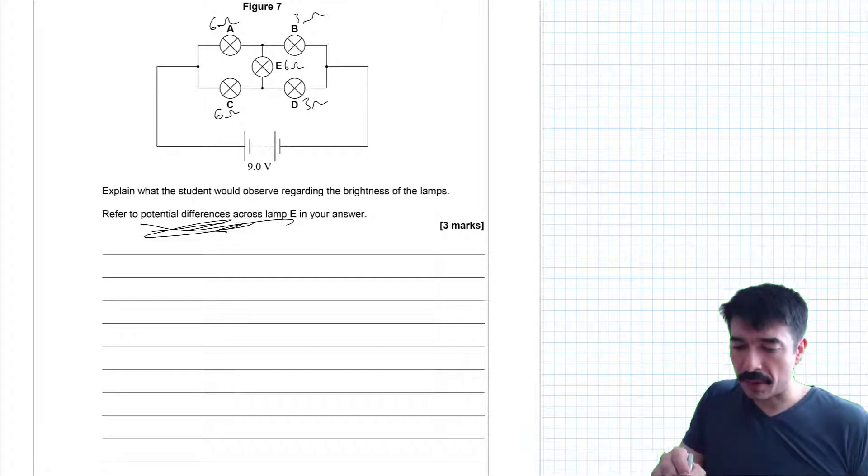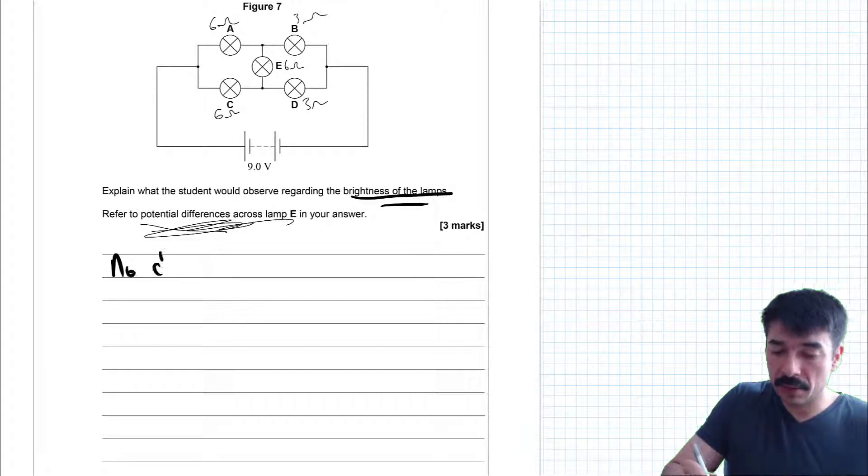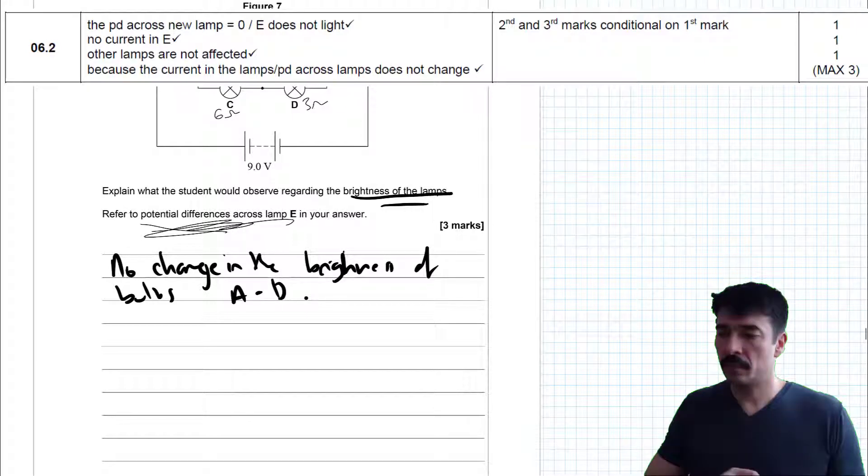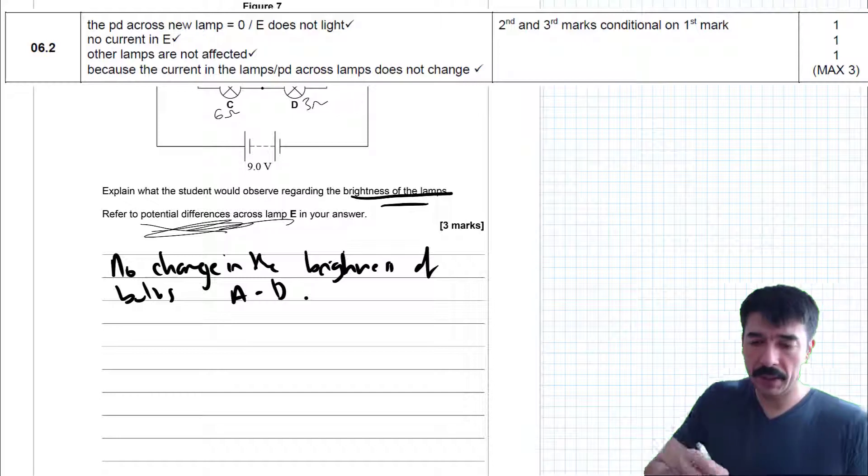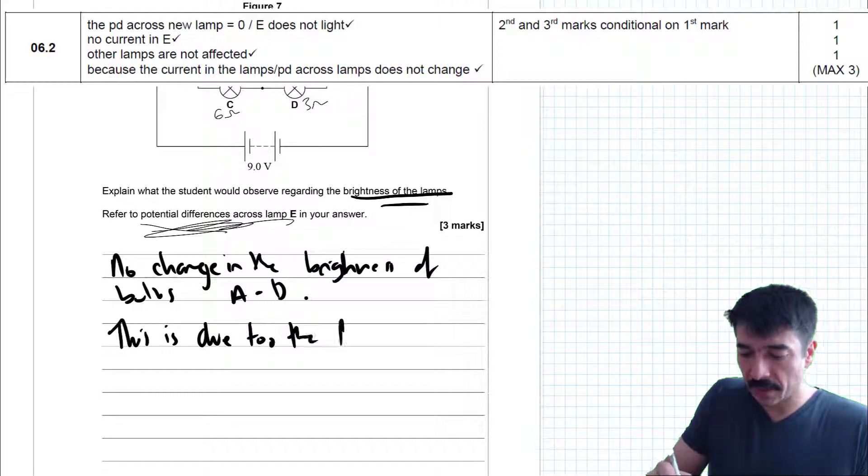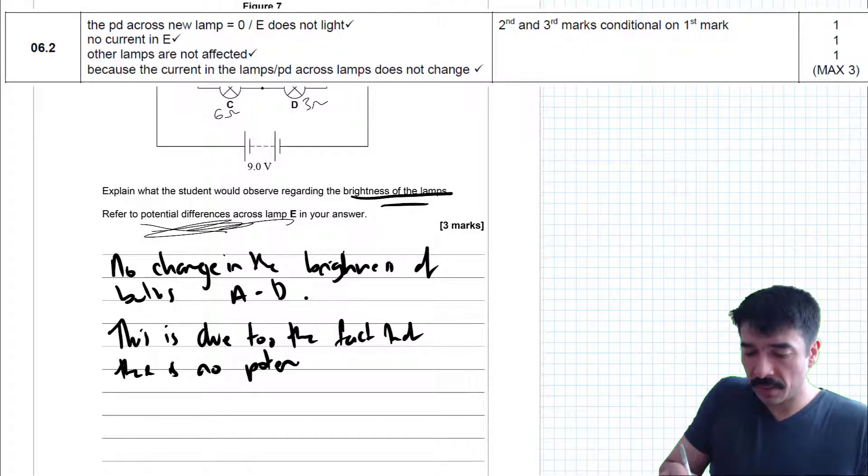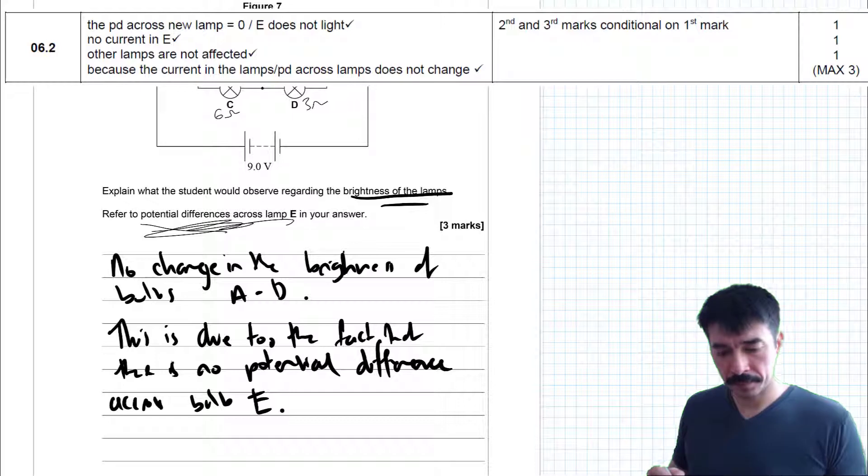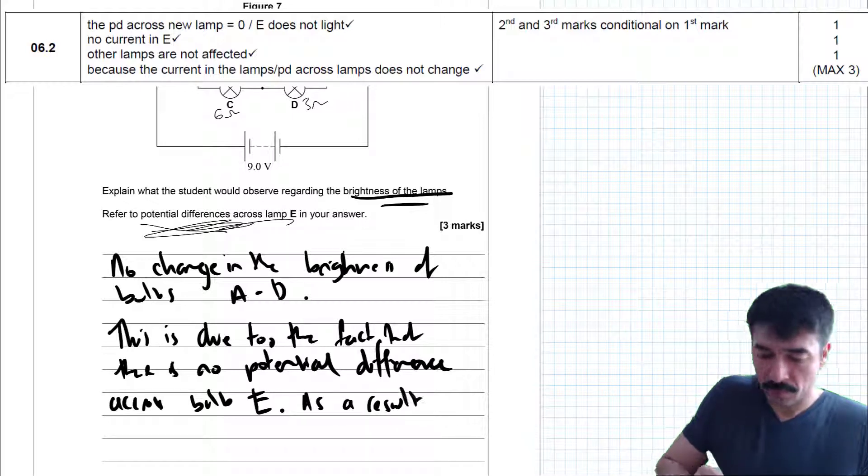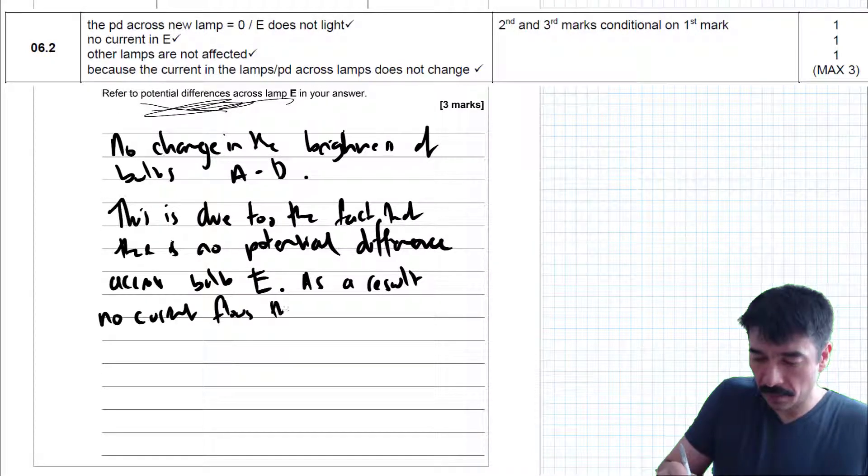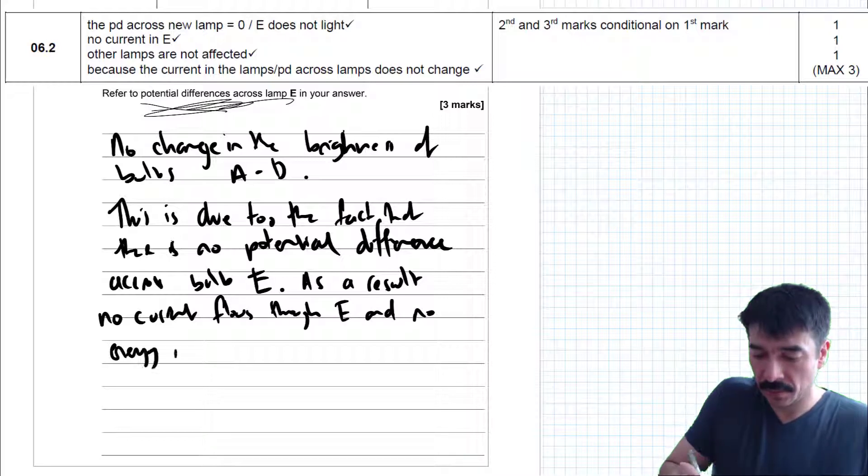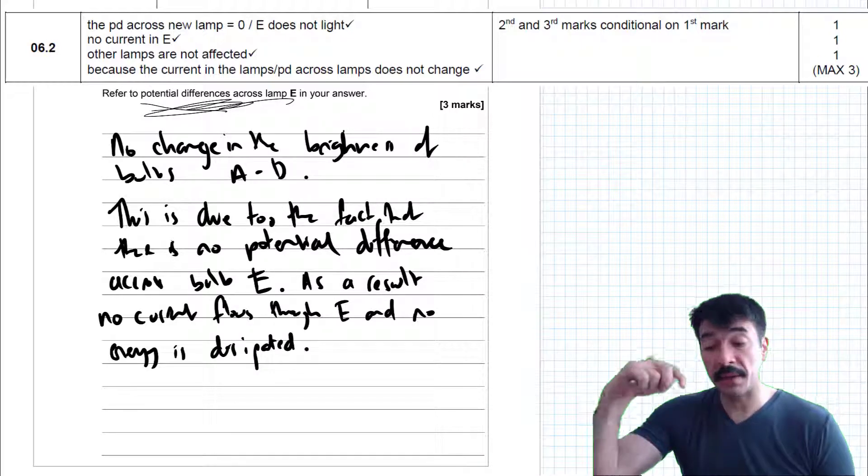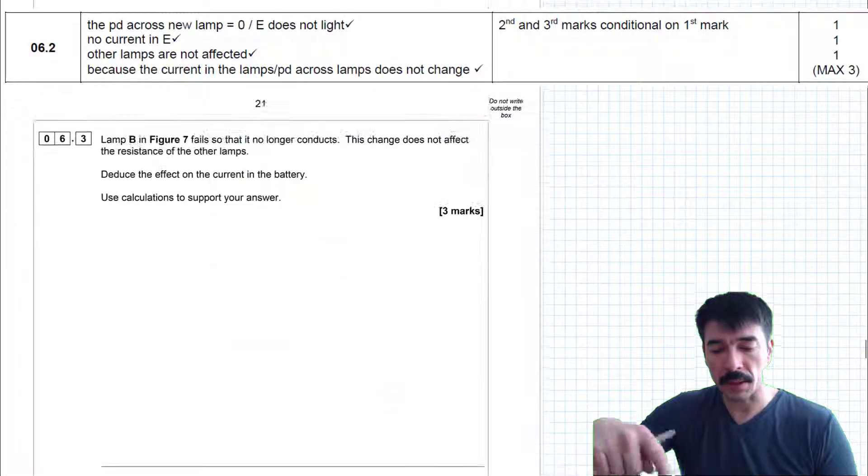So this is the explanation as to why no current flows through E. Let's go back to our question. It's something you won't have access to in the exam, but if you play with it now, you have no mind. So what I'm going to do is explain with regard the brightness of the lamps. So I'm going to say there's going to be no change. So no change in the brightness of bulbs A and D. This is due to the fact that there is no potential difference across bulb E. As a result, no current flows through E and no energy is dissipated. So because bulb E is drawing no power, it doesn't affect the rest of the components in the circuit. So hopefully I've said enough to get the marks. I'll put the mark scheme up and check afterwards.